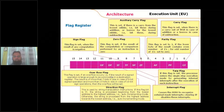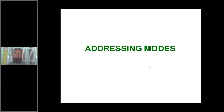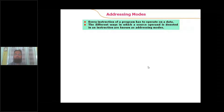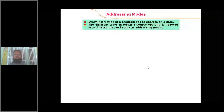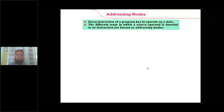Addressing mode means the method of locating data values. To perform any activity, data values need to be accessed, and the processor needs to locate those values. Data values may be in a register, in a memory location, or taken directly. The method of locating the data values in order to execute an instruction is called an addressing mode.